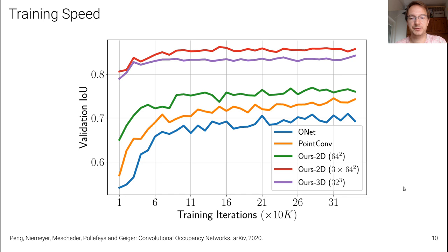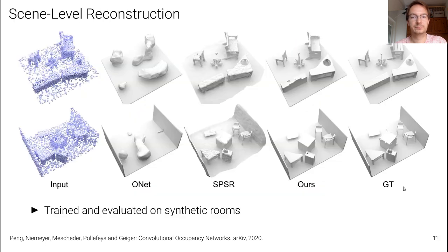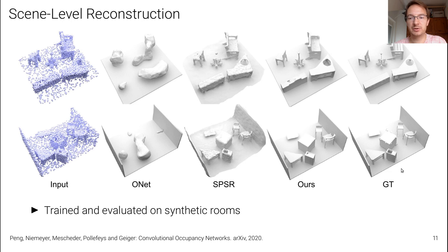We also observed that using convolutional occupancy networks yields faster training compared to standard occupancy networks. Not only do we achieve higher validation IoU, we also converge faster. For scene-level reconstruction, the input is a point cloud of a synthetic room scene. Occupancy network produces smooth but detail-poor results; Poisson surface reconstruction gives very noisy results; our method produces smooth and detailed reconstructions.